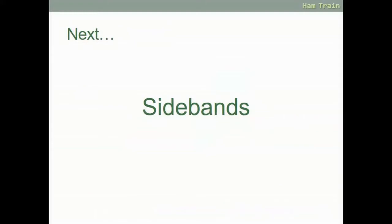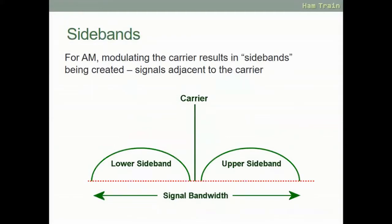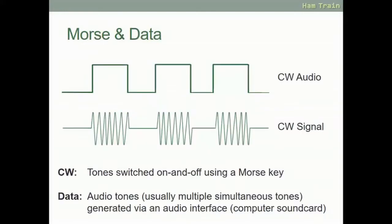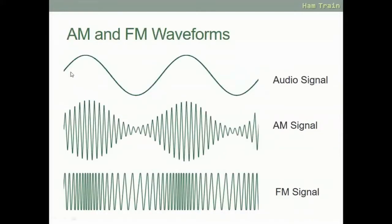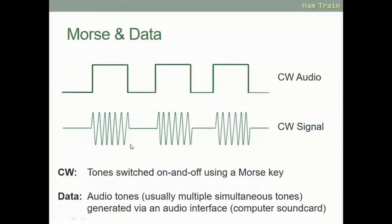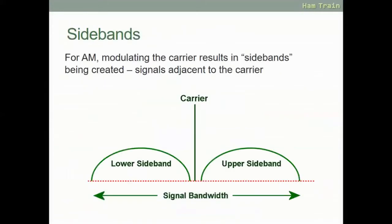Now we're going to look at sidebands. Sidebands are a part of an AM signal. Whenever you produce an AM signal it results in sidebands. Previously we were looking at the AM wave from side-on; now we're looking straight down the wave. You can see the carrier in the center, and on each side of the carrier you have two sidebands — a lower sideband and an upper sideband — which are signals adjacent to the carrier.